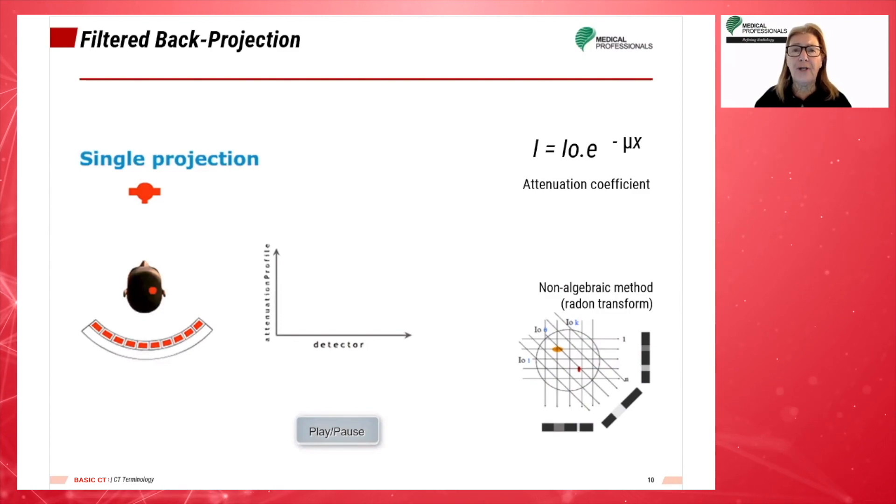Also known as filtered back projection, the projection profile is filtered or convolved to remove the typical blurring of the simple back projection technique. Applying a filter function to an attenuation profile is called convolution. Filter functions may be referred to as algorithms, convolution filters, or kernels. Filter functions can only be applied to raw data.